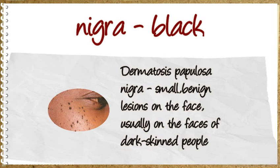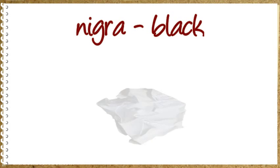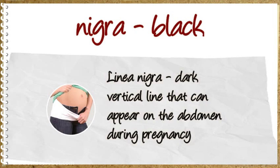Dermatosis Papulosa Nigra: small benign lesions on the face, usually on the faces of dark-skinned people. Linea Nigra: dark vertical line that can appear on the abdomen during pregnancy.